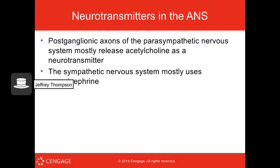When it comes to neurotransmitters in the autonomic nervous system: the sympathetic nervous system uses norepinephrine, and the parasympathetic nervous system uses acetylcholine.